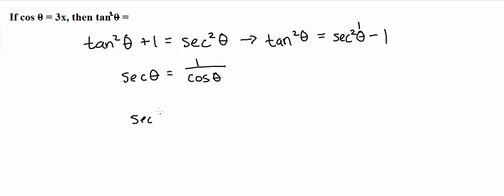So secant of theta is equal to 1 over the cosine of theta, which is 3x. Therefore, secant squared theta is just equal to 1 over 3x squared, which is equal to 1 over 9x squared.